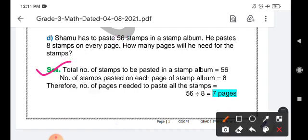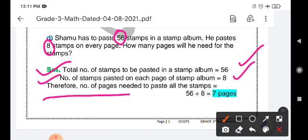Total number of stamps that Shamu has is 56. Number of stamps that are pasted in one page is 8, and therefore total number of pages needed to paste all the stamps will be 56 divided by 8.